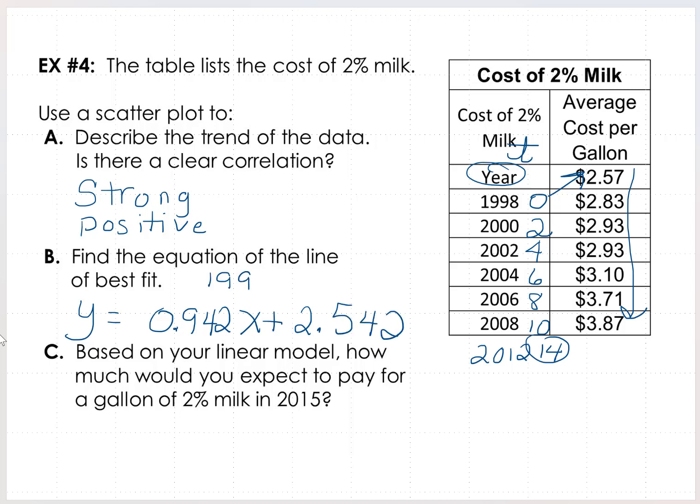And 1998 represents t equals 0. So based on our linear model, how much would you expect to pay for a gallon of 2% milk in 2015? So 2015 would be 3 years more. So that would be t is 17 in this case. And in the 17th year from this model, 2015, you would expect to pay $4.14 by substituting 17 in place of x there.